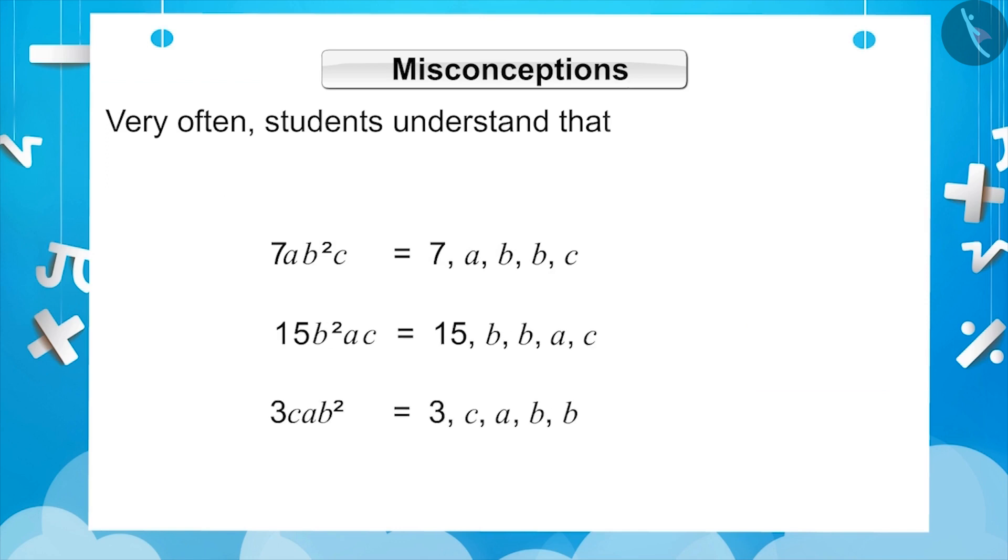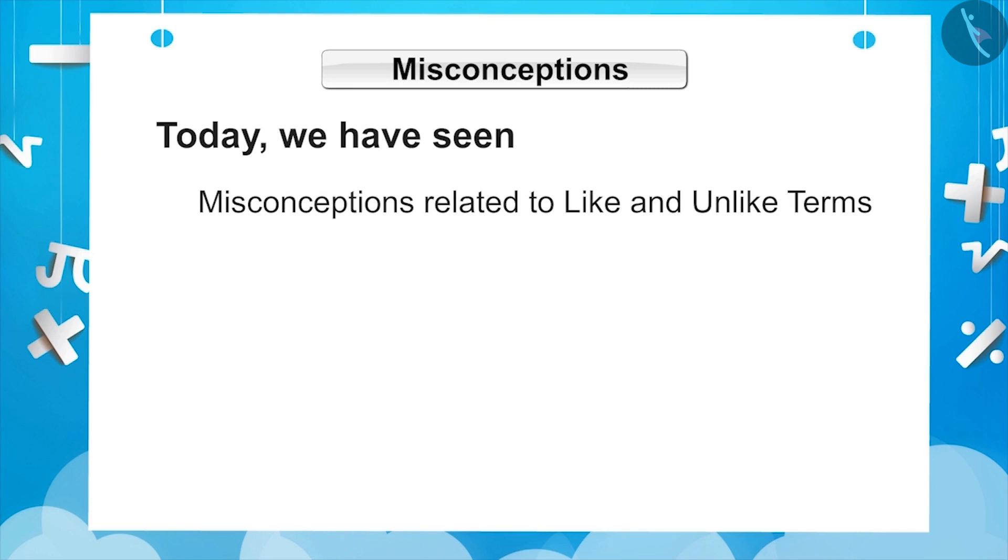But it is not necessarily so. Even if the variables of two terms are similar but their order is not the same, the terms will be considered as like terms. Today we have learned the misconceptions related to like and unlike terms.